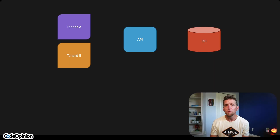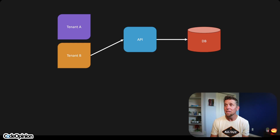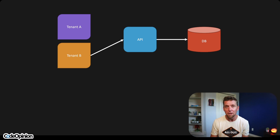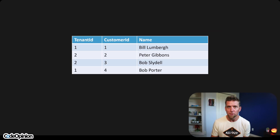The first option is a shared database. This means that we have tenant A hitting our API or application, connecting and performing operations on our database, and tenant B is hitting the exact same API and the exact same database instance using the exact same schema.